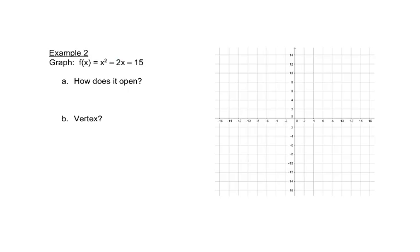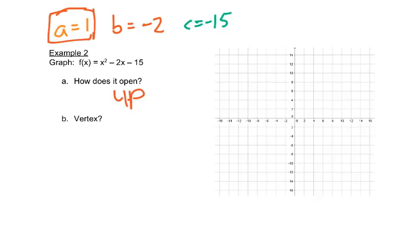So now let's look at this. So here, again, it's in standard form. We know a is 1, b is negative 2, and c is negative 15. First of all, because a is positive, we know that the graph has to open up. So let's find the vertex.